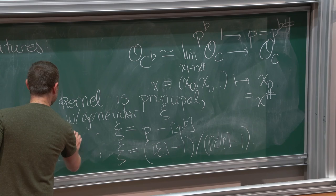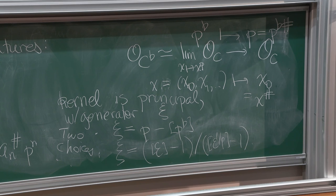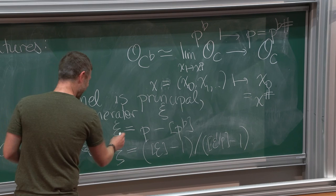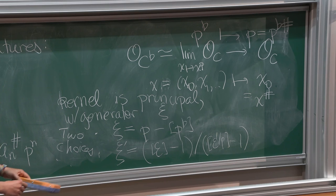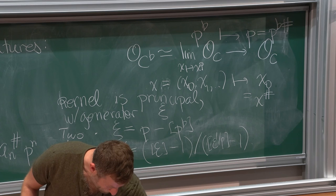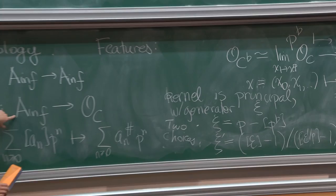Another choice for xi: let epsilon be the compatible sequence of primitive p^n-th roots of unity zeta_{p^n} in O_C-tilt. Then epsilon-sharp equals 1, so [epsilon] minus 1 lies in the kernel of theta. However, this does not generate the kernel. Since epsilon^{1/p} has sharp map zeta_p, and dividing [epsilon] minus 1 by [epsilon^{1/p}] minus 1 gives an element of the kernel that does generate — this quotient is another possible value of xi, denoted xi prime. The two choices are related by a unit.